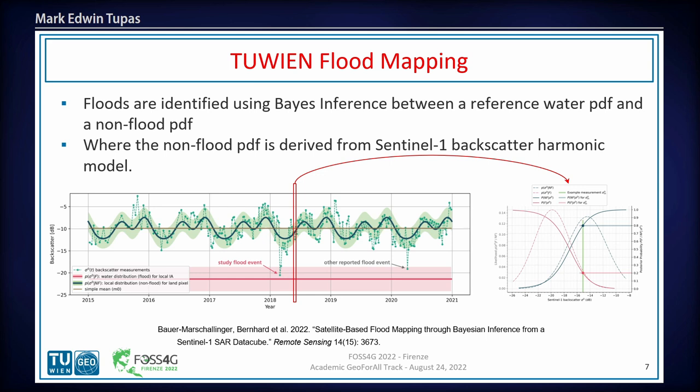What you see in that slice is the mean or expected backscatter at that particular day and the standard deviation of the harmonic model, which we use to generate the non-flooded probability distribution. You also see the water mean and standard deviation for that area. You compare the probability distributions to know which is water and which is not. The cool thing about this algorithm is that we don't assume the backscatter of water is static throughout the year — it changes with seasons. So a decrease in backscatter might not be flooding; it might just be seasonal variation.